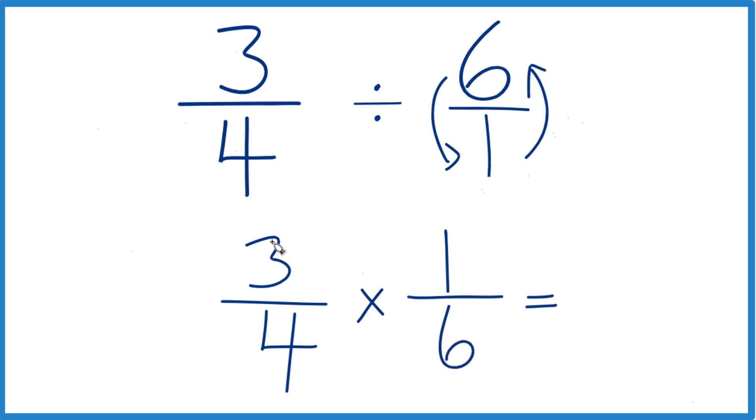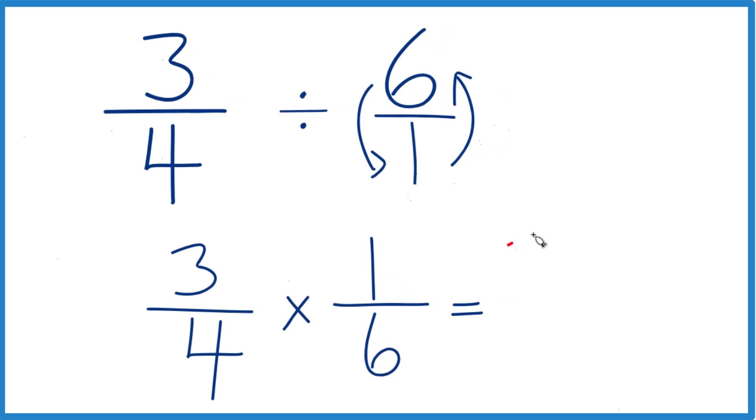With fractions, when we multiply, multiply the numerators. 3 times 1, that's 3. 4 times 6, that's 24.